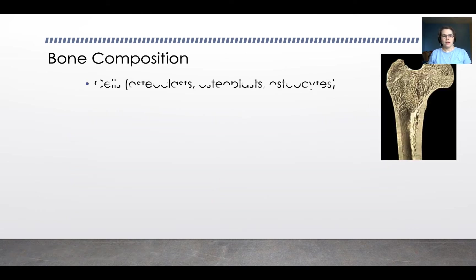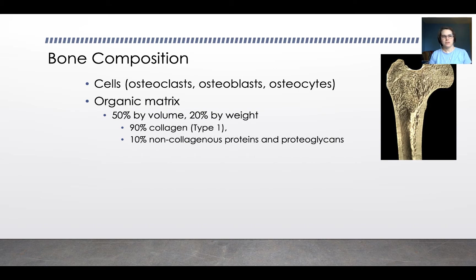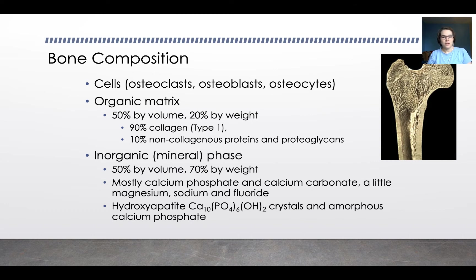Bone is made up of a few groups of things: the cells we just talked about, plus an organic matrix and an inorganic mineral phase. The organic matrix is 50% by volume and 20% by weight of the bone, and is 90% collagen type 1 and 10% non-collagenous proteins and proteoglycans. The inorganic or mineral phase is 50% by volume and 70% by weight, mostly calcium phosphate and calcium carbonate with trace elements like magnesium, sodium, and fluoride — which can actually be used in archaeological contexts as tracers to reveal where someone lived and what they ate.